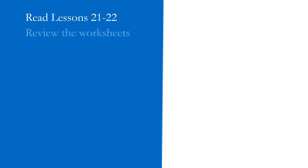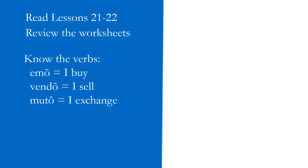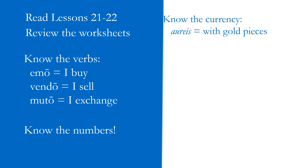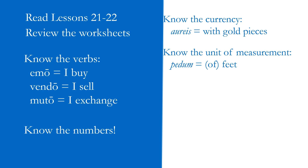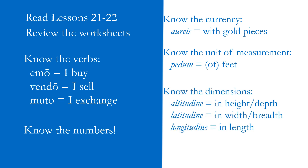To help you prepare: re-read lessons 21 and 22 and review the worksheets that correspond to those lessons. Know the verbs emo, vendo, and muto. Definitely know the numbers — that includes Roman numerals, ordinals, and cardinals. Know the currency, which is going to be aureis, unless it's some object being exchanged. Know the unit of measurement, which for our purposes is just pedum. And know the dimensions in their ablative form: altitudine, latitudine, longitudine. Good luck studying!